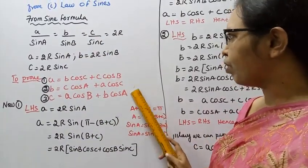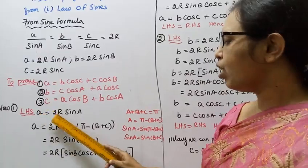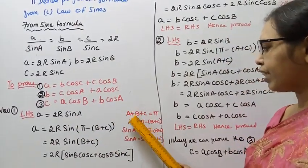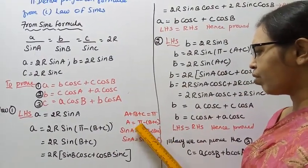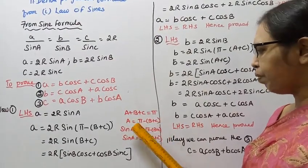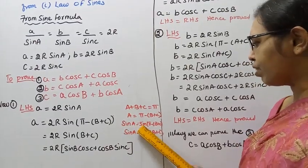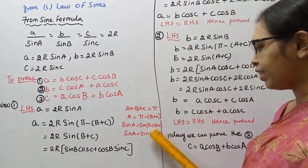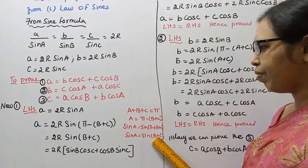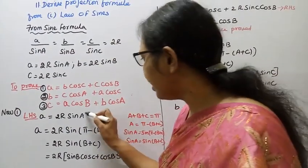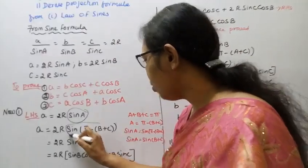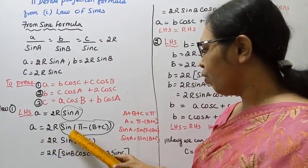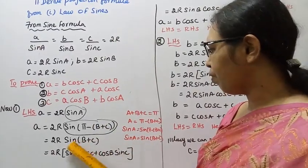From the sine formula, a = 2R sin A. In a triangle, A + B + C = π, so A = π − (B + C). Therefore sin A = sin(π − (B + C)). Using sin(180° − θ) = sin θ, we get sin A = sin(B + C). So a = 2R sin(B + C).